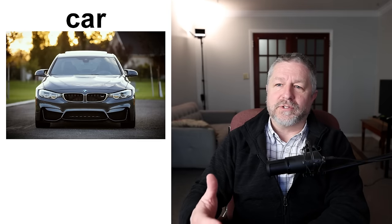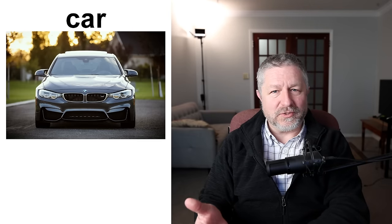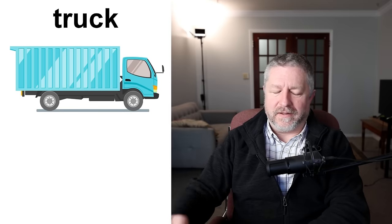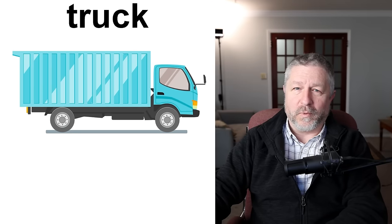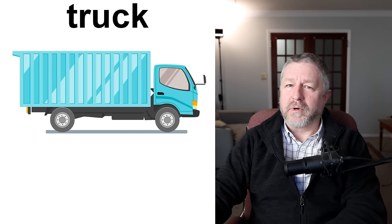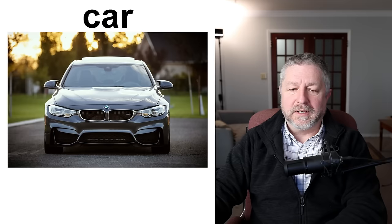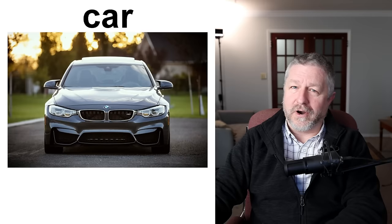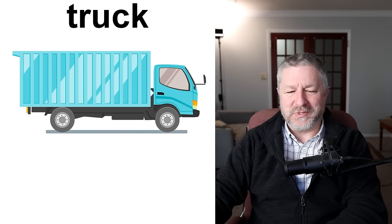Especially in a country as big as Canada. A car is used for people to get from one place to another. A truck, on the other hand, is used to get things from one place to another. These are probably the two most common vehicles that I see on the road — a car and a truck, or cars and trucks in the plural.